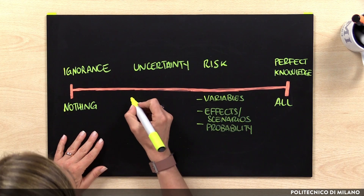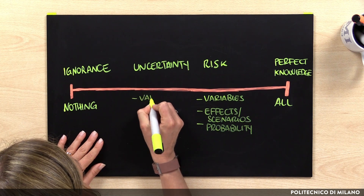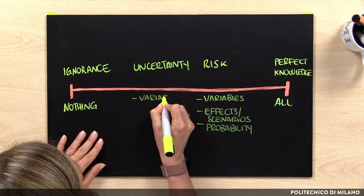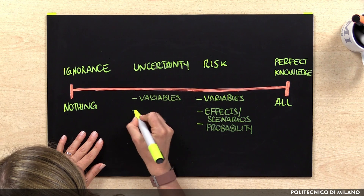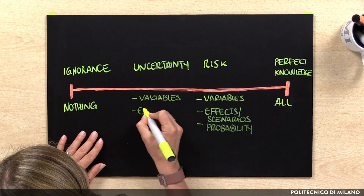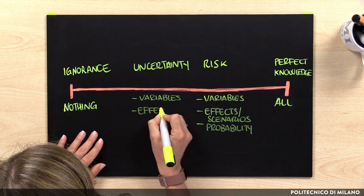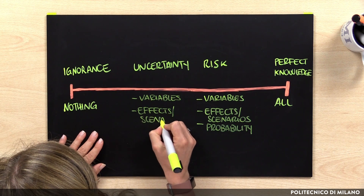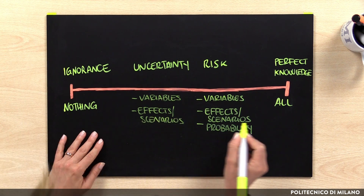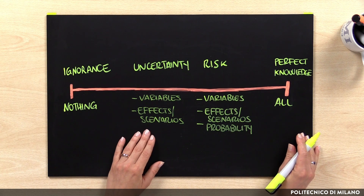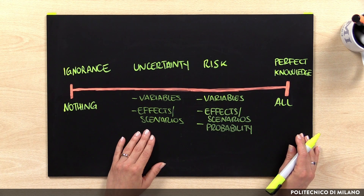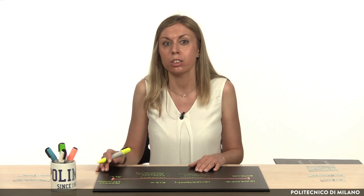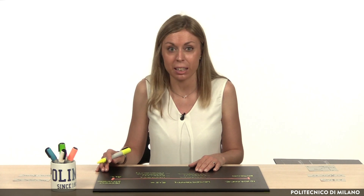On the other hand, uncertainty pertains to those situations where the decision maker is aware of the main variables to consider in the decision-making process as well as of the main scenarios that might happen. Differently from the previous situation, the problem is so complex or so new that the decision maker is not capable of assigning a probability of occurrence to each scenario.